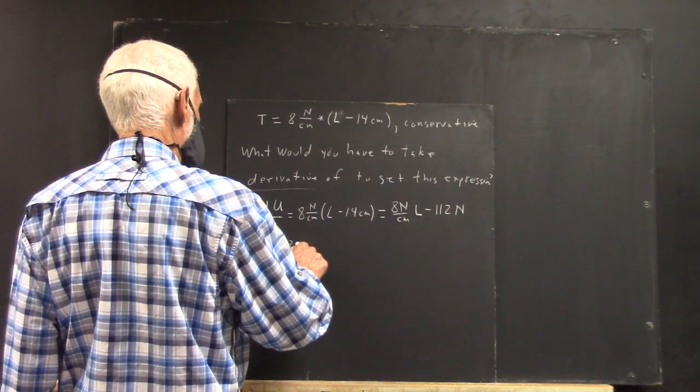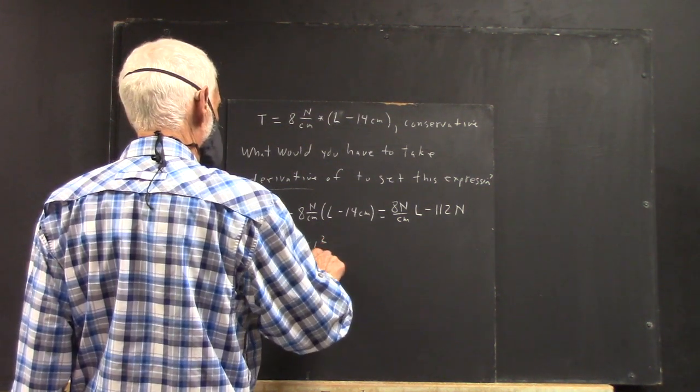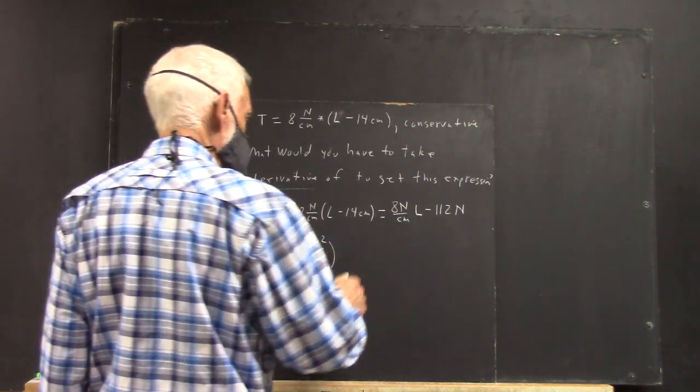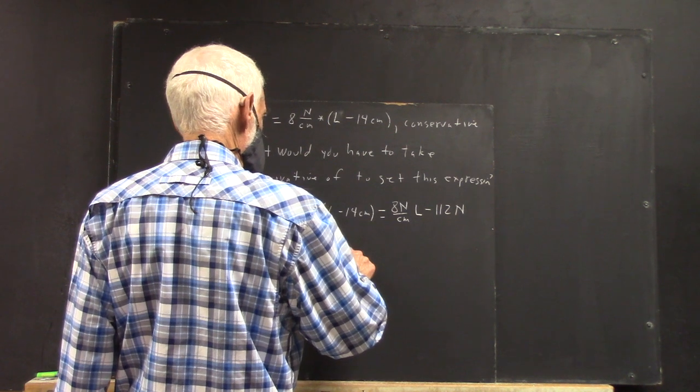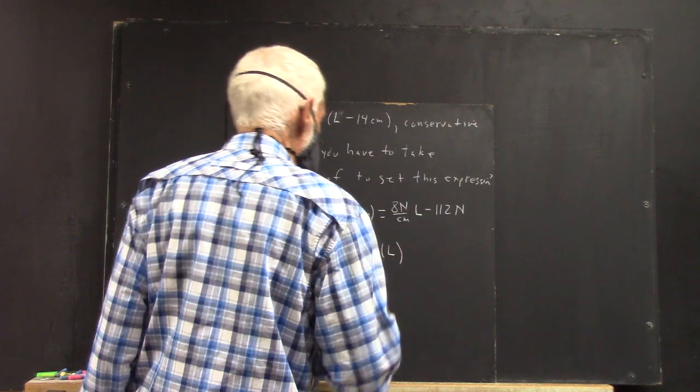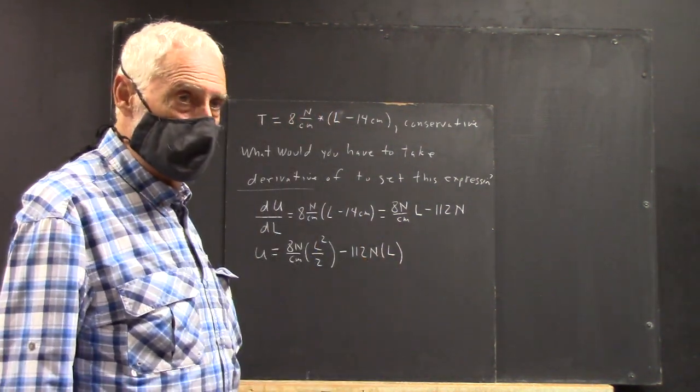You can verify. And then, to get 112 newtons, you take the derivative of 112 newtons times L.